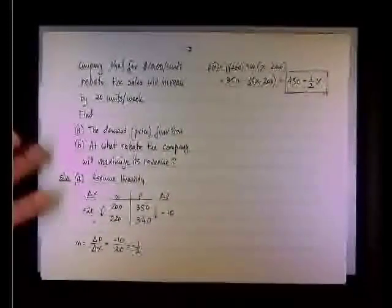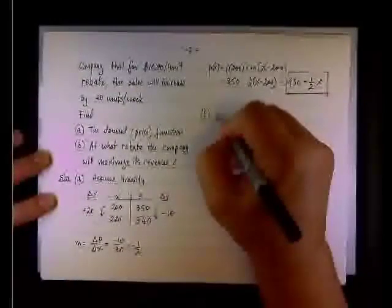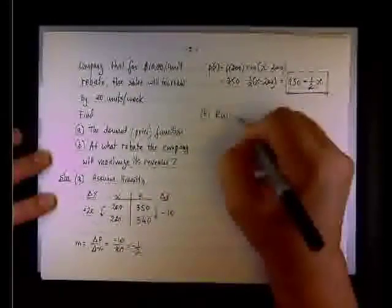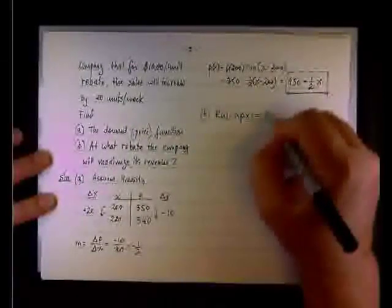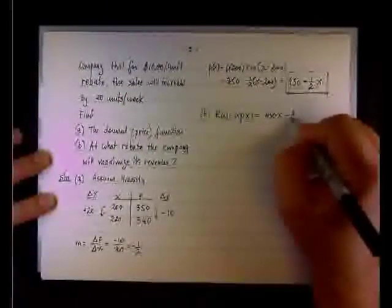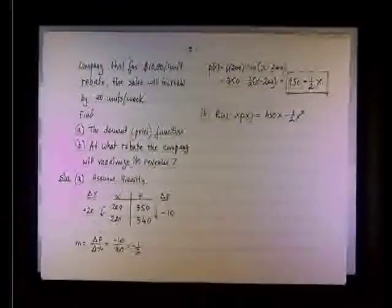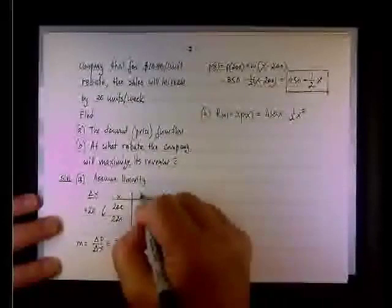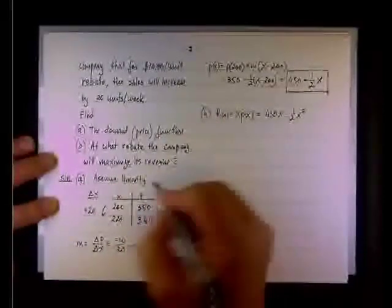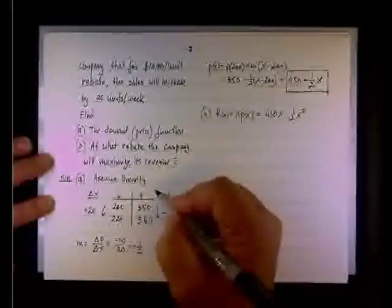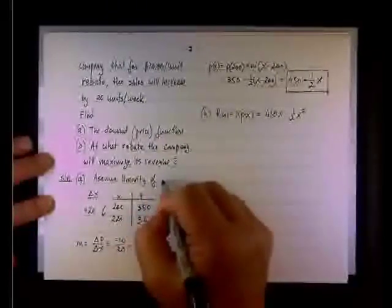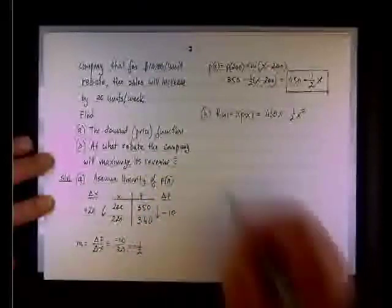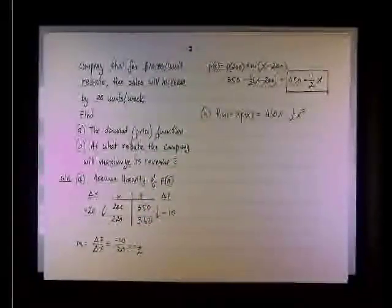Now we need to maximize the revenue. So part b, the revenue function is x times p of x. Quantity times the price. So it will be 450x minus 1 half x squared.